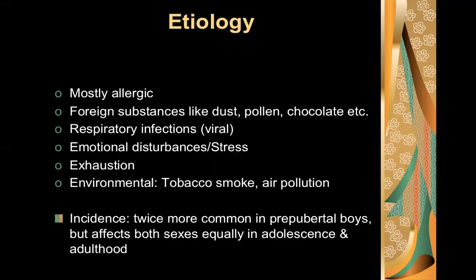The etiology of bronchial asthma is a combination of genetic and environmental factors. It is mostly allergic, and foreign substances like dust, pollen, and chocolate can trigger an asthmatic attack. Patients with respiratory viral infections, emotional disturbances, increased stress, or exhaustion can also trigger an attack, as can environmental pollutants such as air pollution and tobacco smoke.